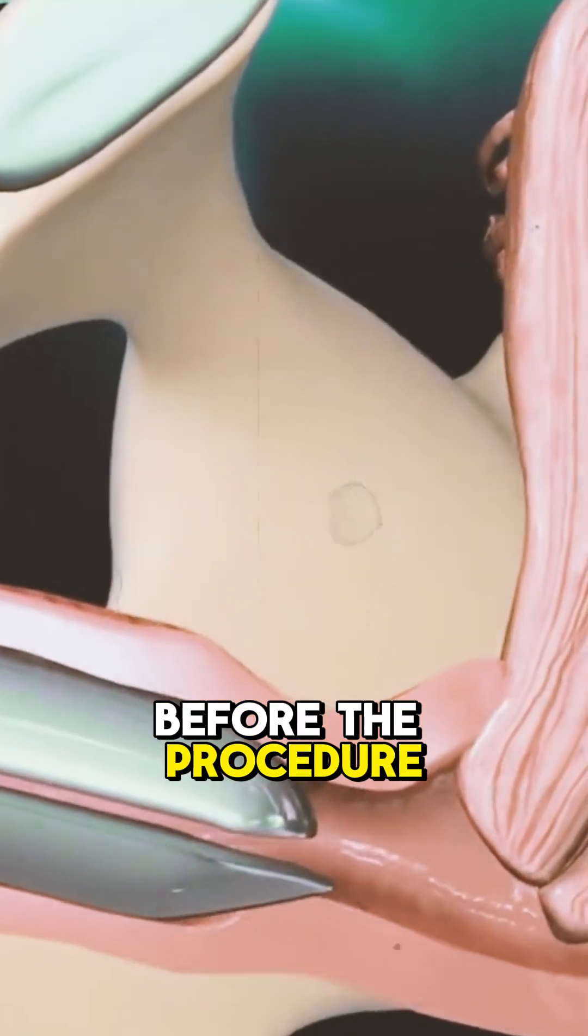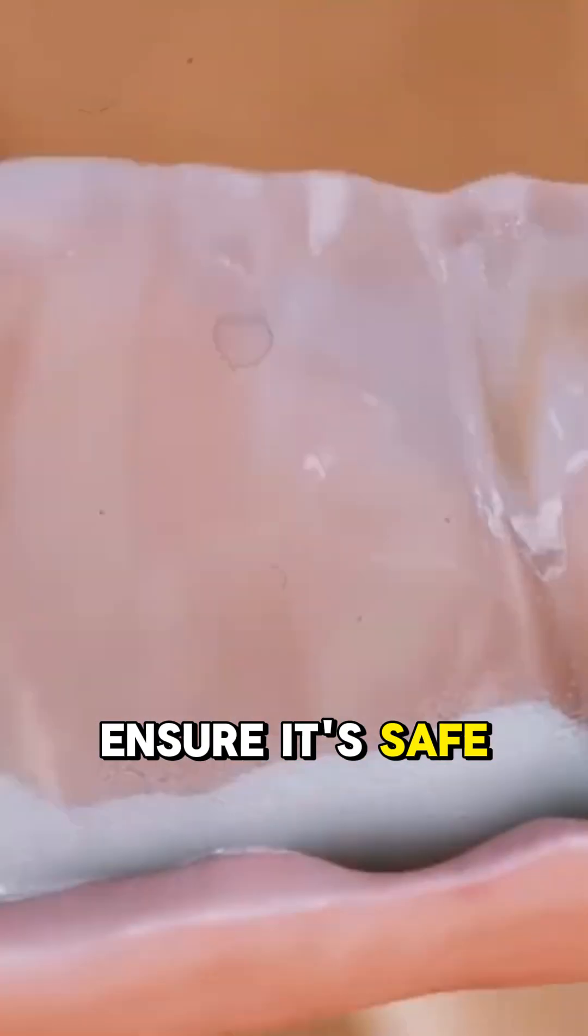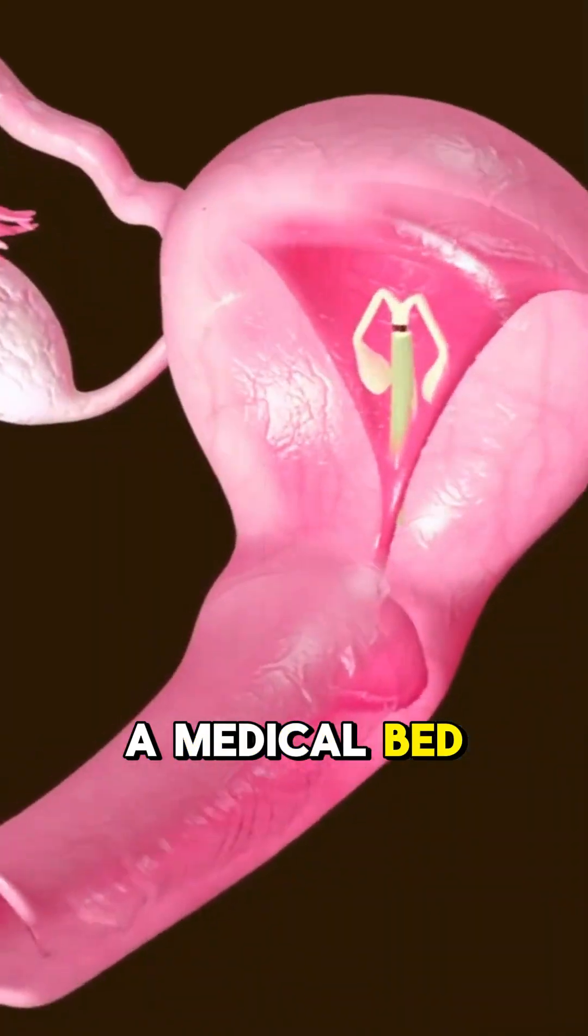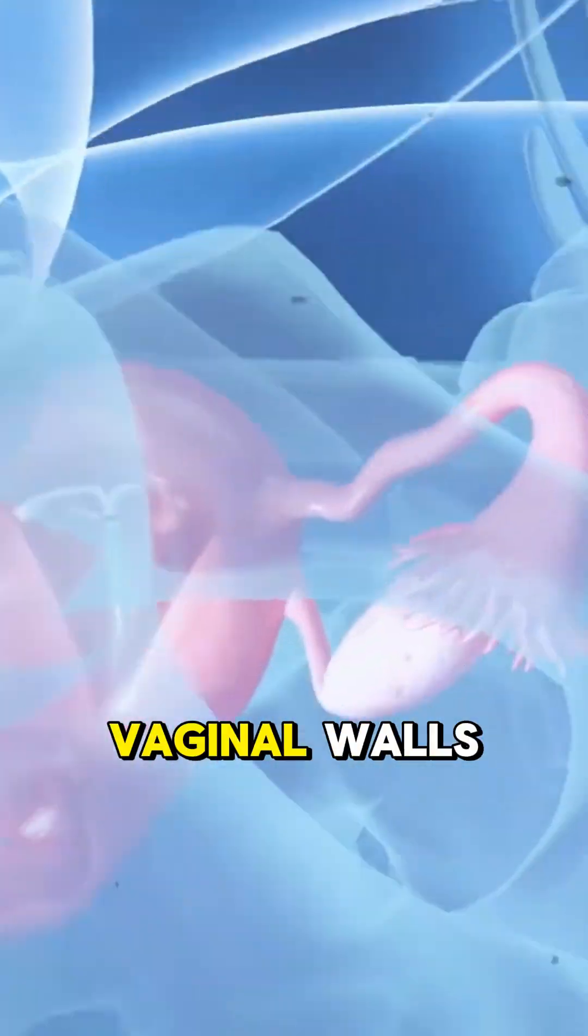Before the procedure, doctors check your medical history to ensure it's safe. Then, during insertion, you lie on a medical bed. A device called a speculum is used to gently open the vaginal walls.